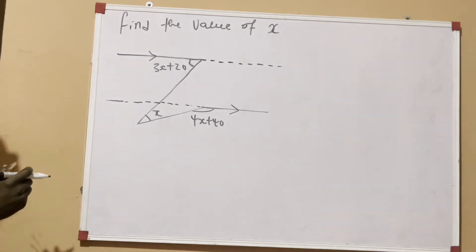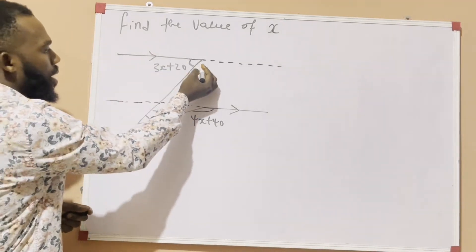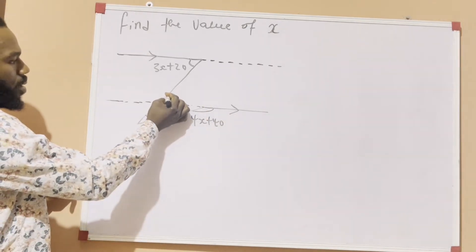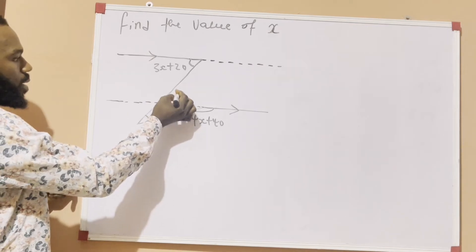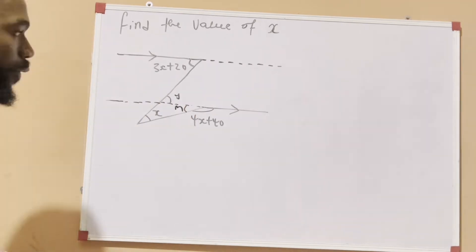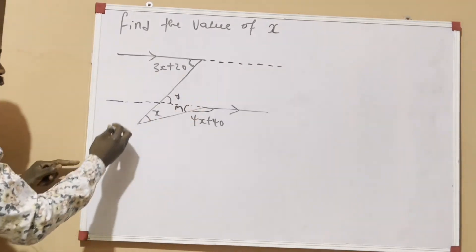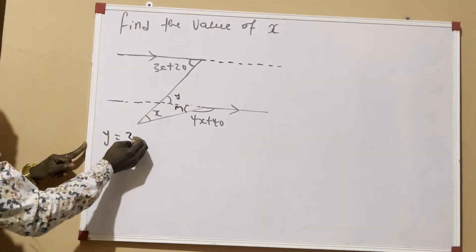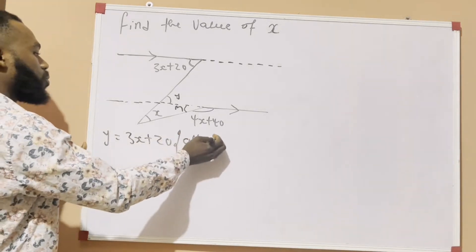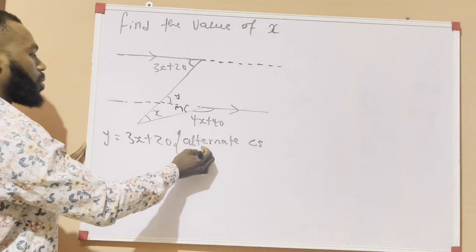Now, what we are going to do now is this. Here we have alternate angles. Here, here, here. Let us assume that here is y. And let us assume that here is n. We know these are not given, but let's just give it to make the explanation more clearer. Now, from this point of view, y is equal to 3x plus 20. Why? Alternate angles are equal.